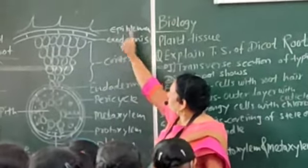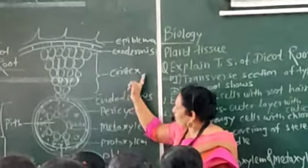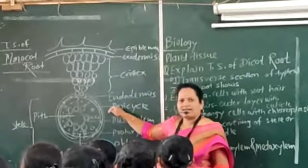All the other structures you can see are exodermis, cortex, endodermis, pericycle are similar.